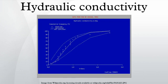Hydraulic conductivity, symbolically represented, is a property of vascular plants, soils and rocks that describes the ease with which a fluid can move through pore spaces or fractures.